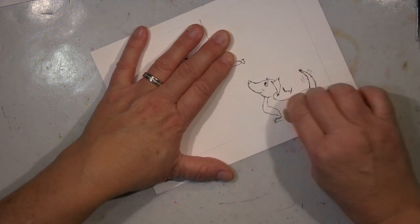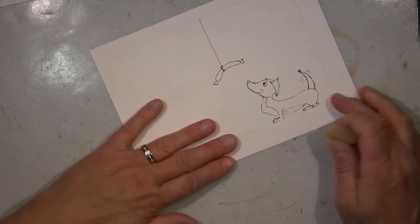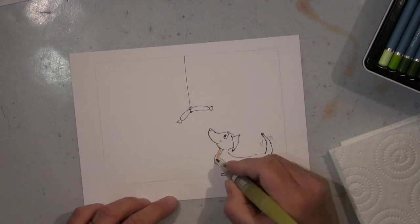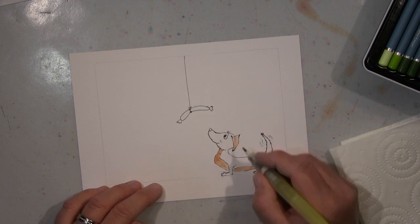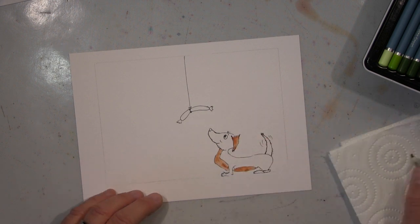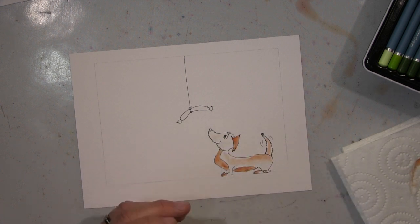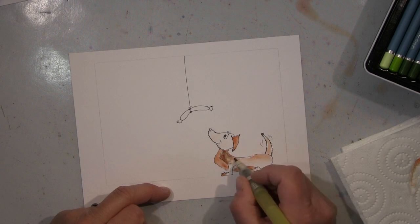Das ist im Prinzip auch das, was ich kann. Mehr kann ich nicht, aber für mich reicht's und ich mag es gern. So, jetzt radiere ich erst alles aus. Und jetzt fange ich mit dem Kolorieren an.